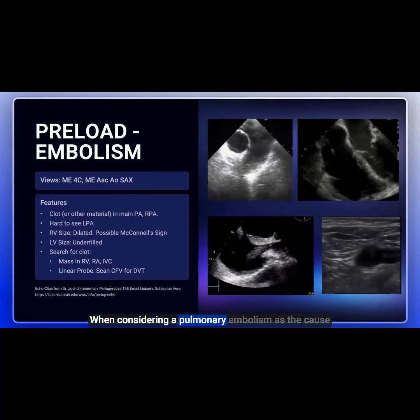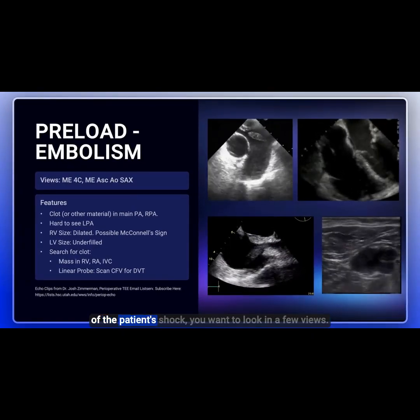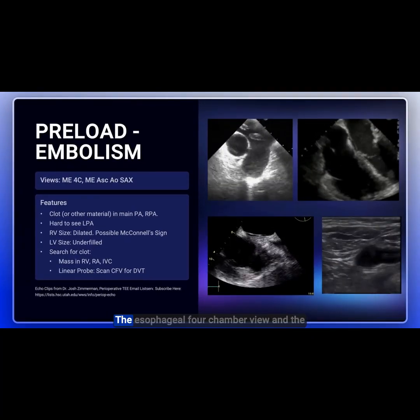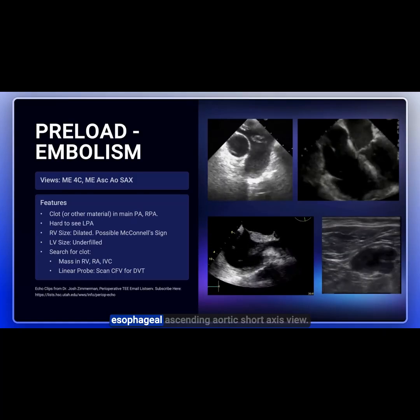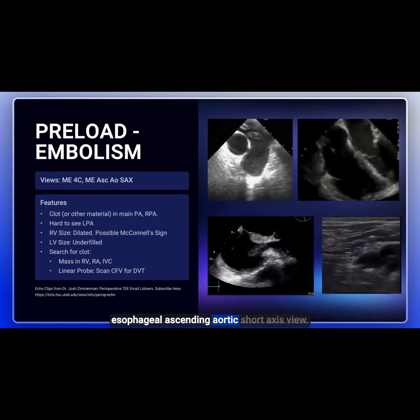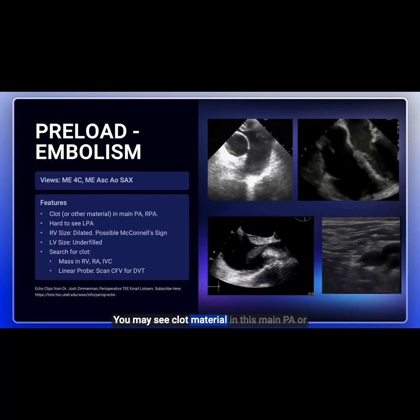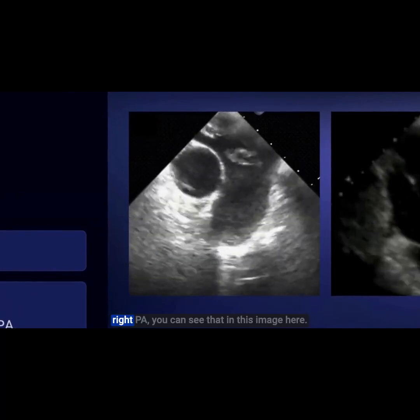When considering a pulmonary embolism as the cause of the patient's shock, you want to look at a few views: the midesophageal four-chamber view and the midesophageal ascending aortic short-axis view. You may see clot or material in the main PA or right PA.